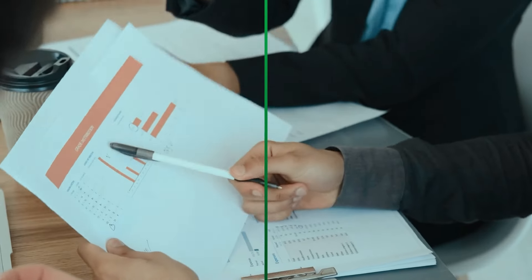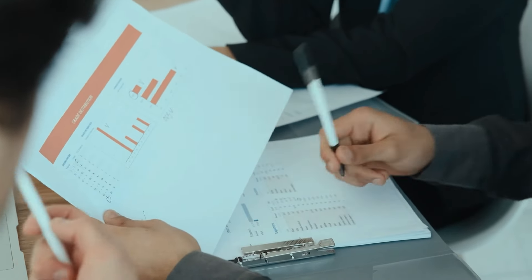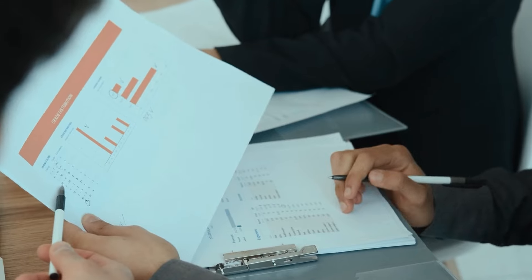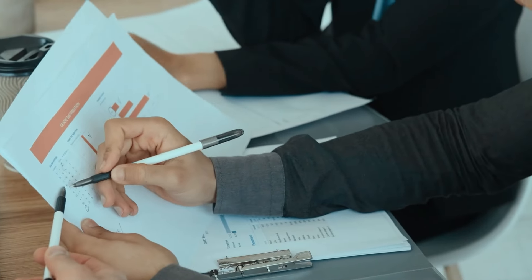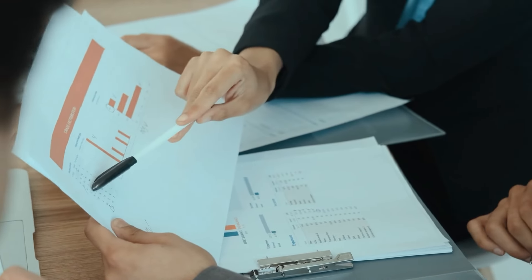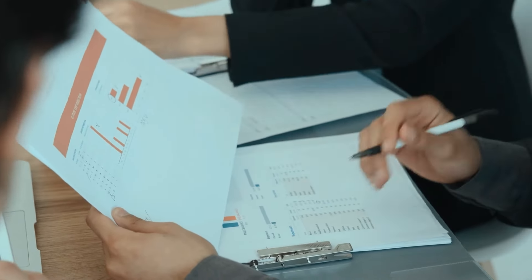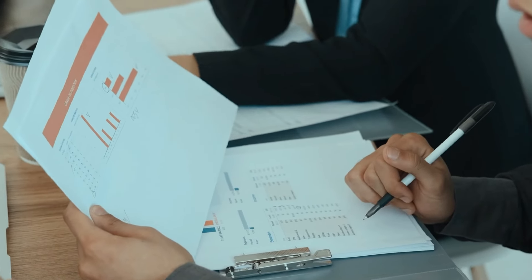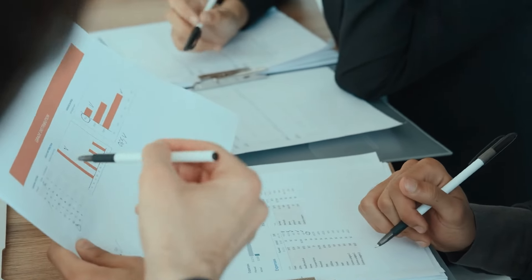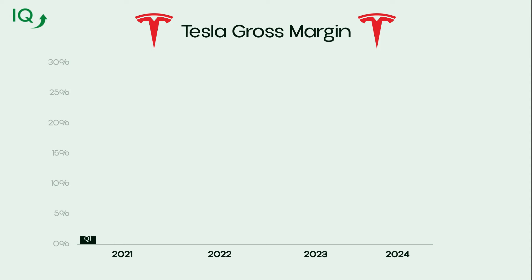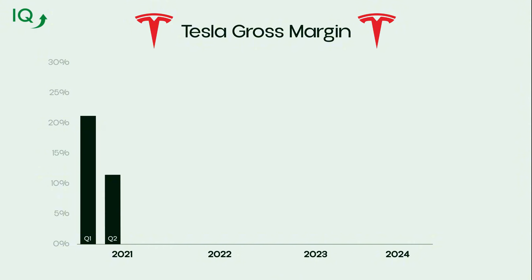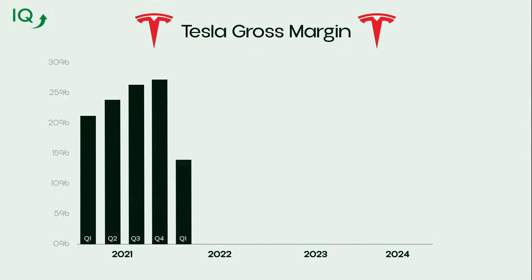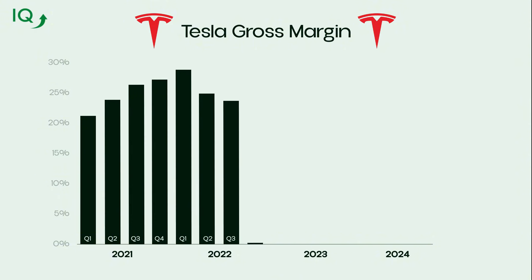One important point to remember as an investor: never look at gross margin in isolation or as a one-time standalone number. Gross margin, like all financial metrics, should be evaluated over time to get a better sense of a company's financial trajectory. Typically, you want to analyze a company's gross margin over the past three to five years to identify any trends.